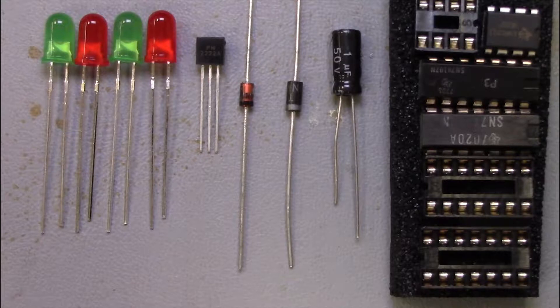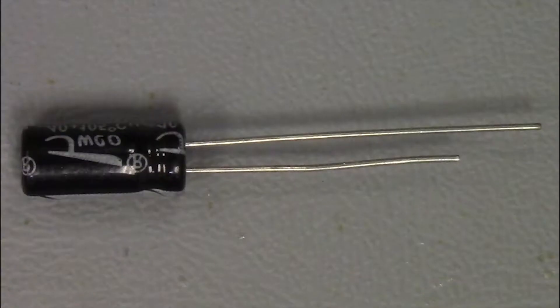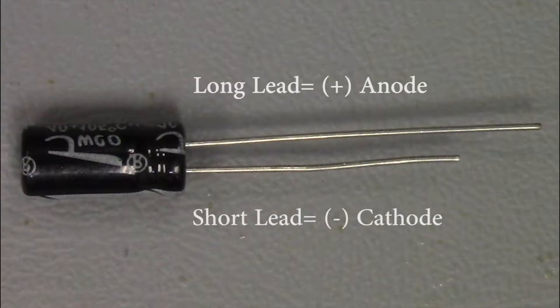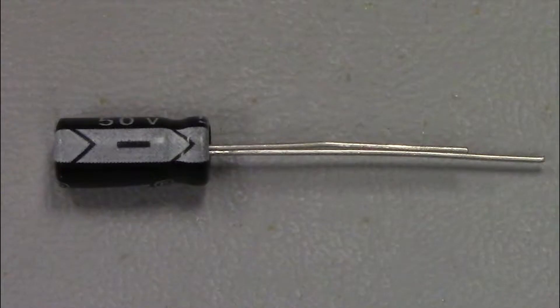Some of the components have a polarity, meaning they have a particular direction you have to install them in. The electrolytic capacitor has a polarity. The short lead is negative and the long lead is positive. The negative side is also marked on the case.